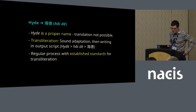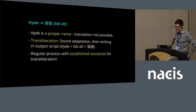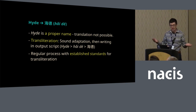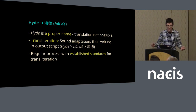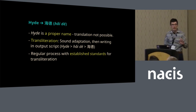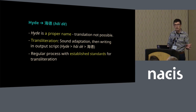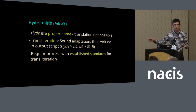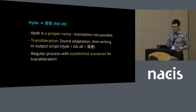Hyde is a proper name, so you can't look it up in a dictionary and know that it means like log or something, some very normal concrete thing. So we need to use a process called transliteration to convert it, in which we convert a sequence of sounds in one language to a sequence of sounds in another language. Then we render that converted sequence of sounds into the script of that language. So Hyde becomes Hyde, and then we render that in simplified characters.